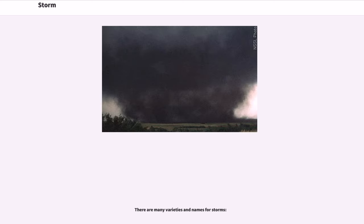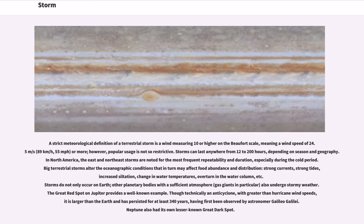There are many varieties and names for storms. A strict meteorological definition of a terrestrial storm is a wind measuring 10 or higher on the Beaufort scale, meaning a wind speed of 24.5 meters per second, 89 kilometers per hour, 55 miles per hour, or more. However, popular usage is not so restrictive. Storms can last anywhere from 12 to 200 hours, depending on season and geography.